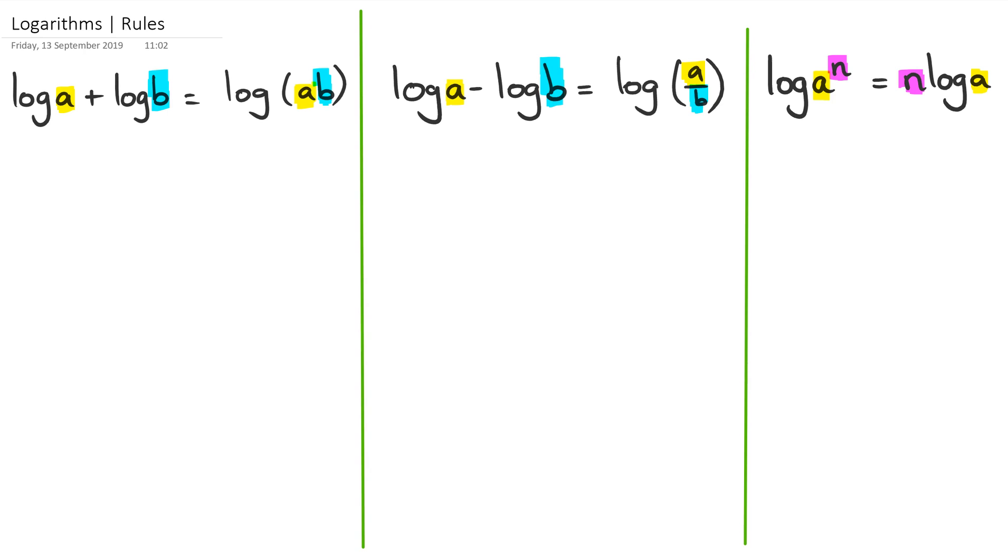So I'm going to look at my first example here. If I have something like log of 2 plus log of 4, then this is just going to be written as log of 4 multiplied by 2...